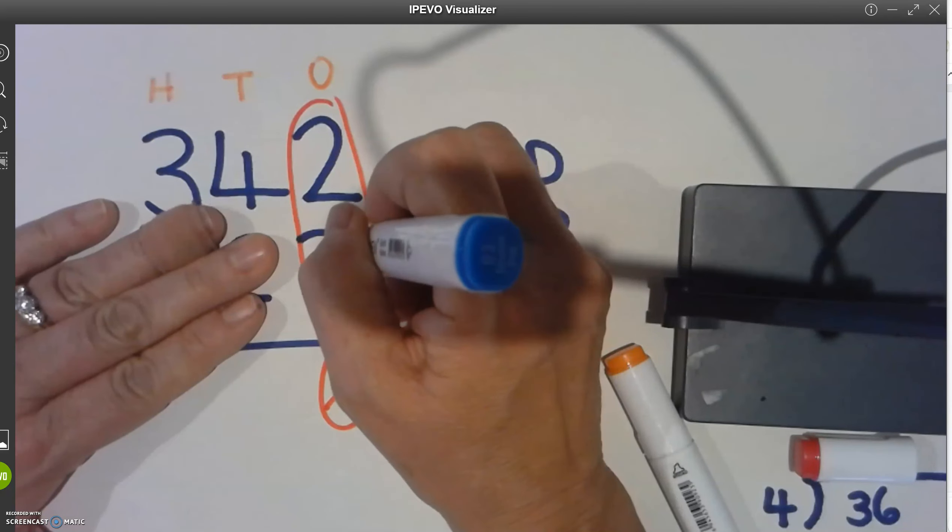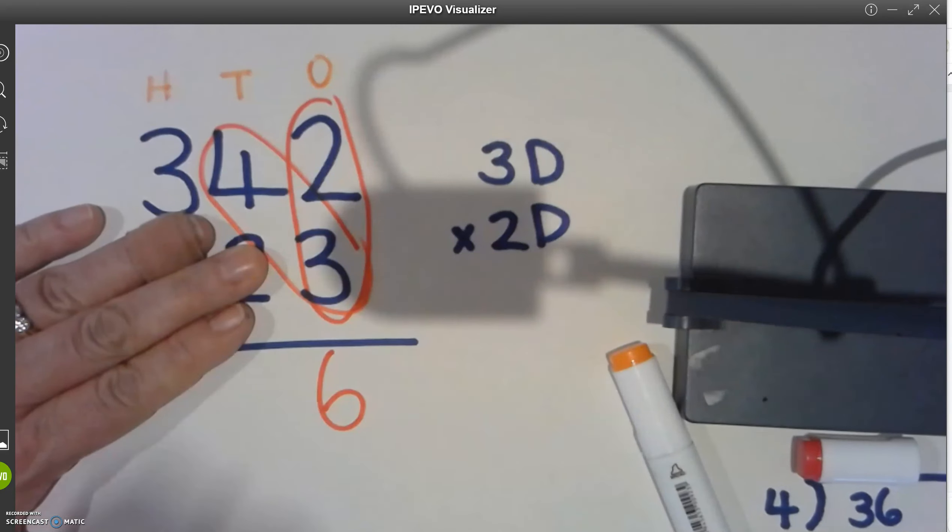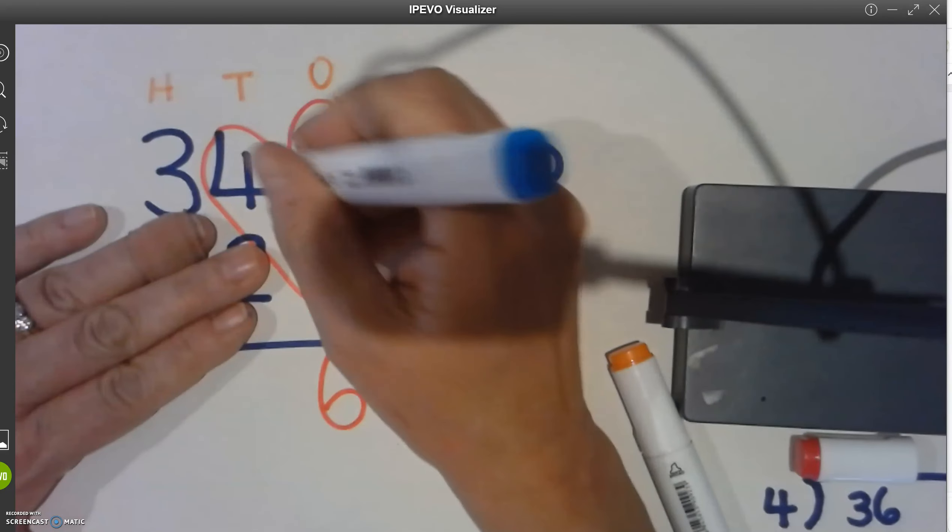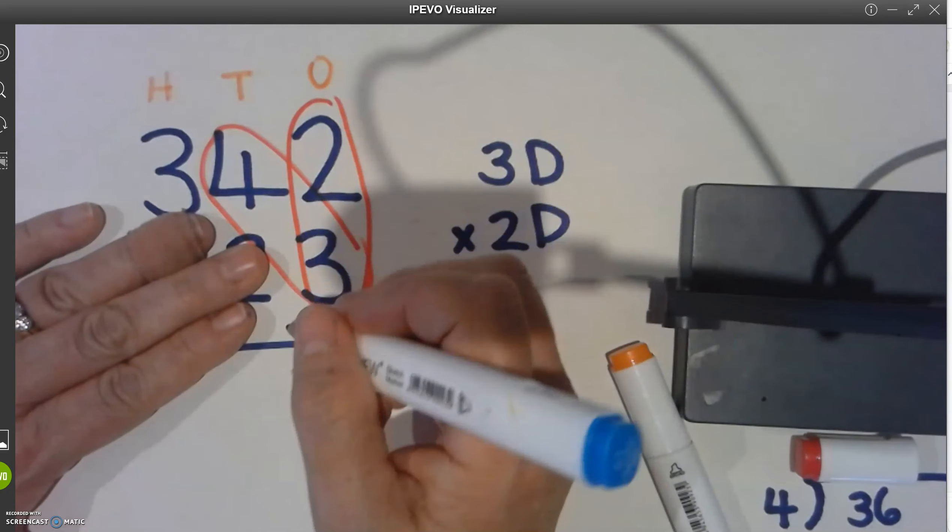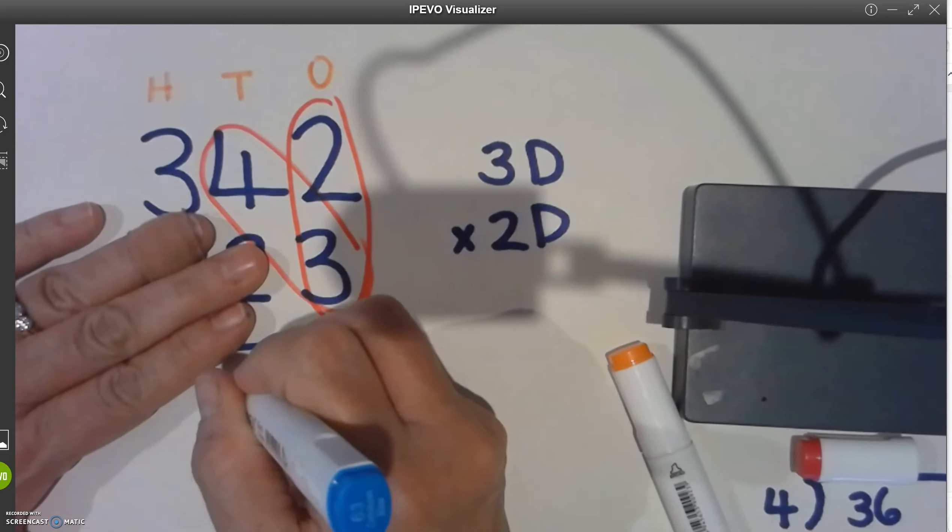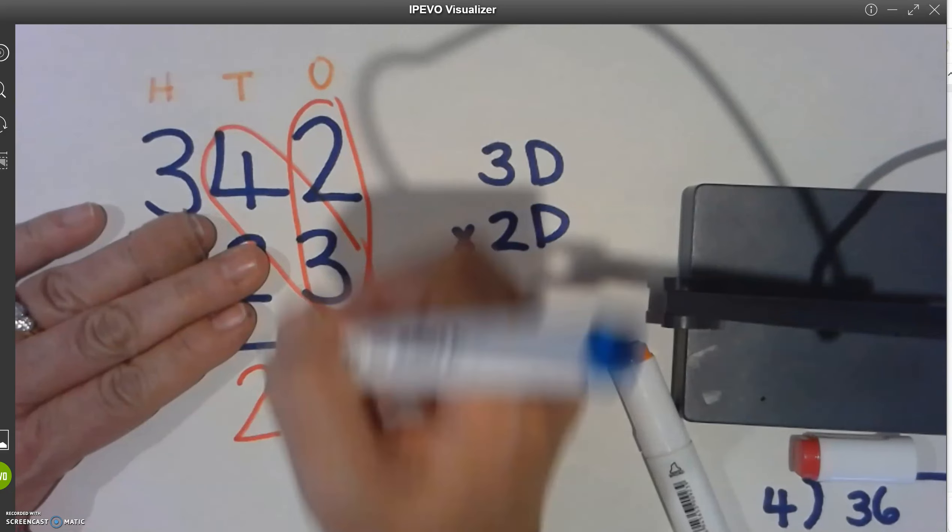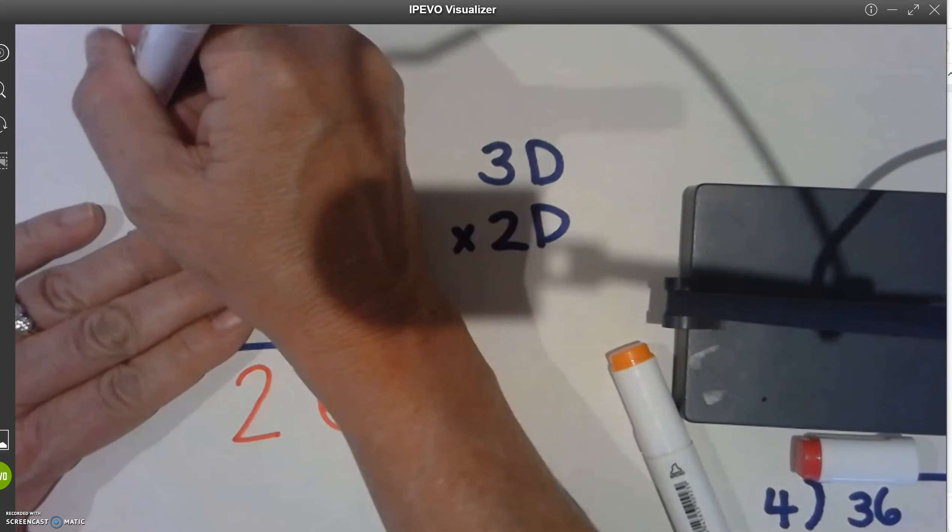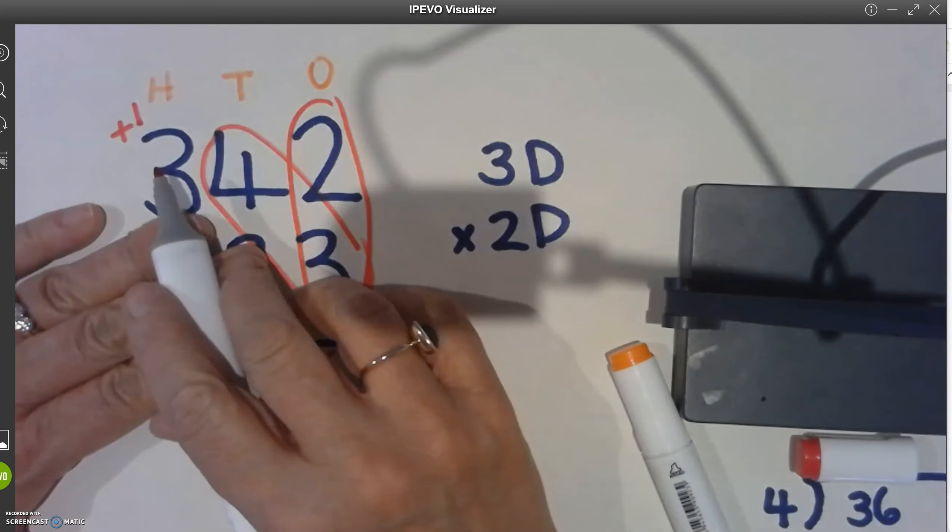We're going to tip our surfboards over and do the tens, which is four multiplied by three. Now remember, I leave the ones and I carry the tens up here, plus one.